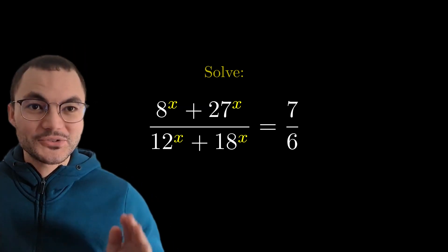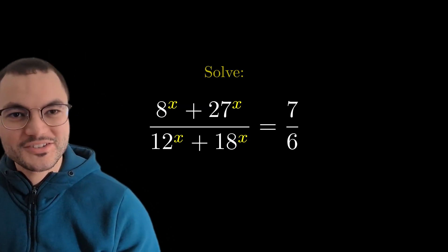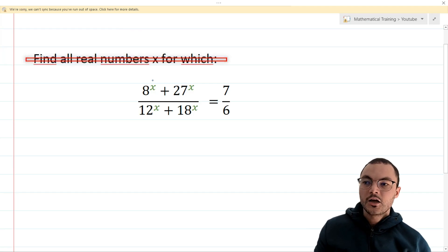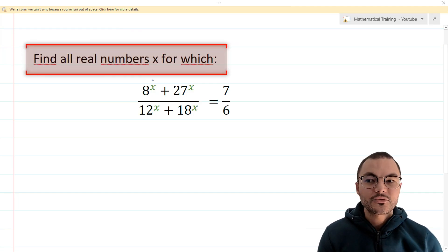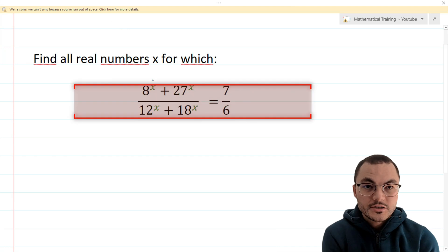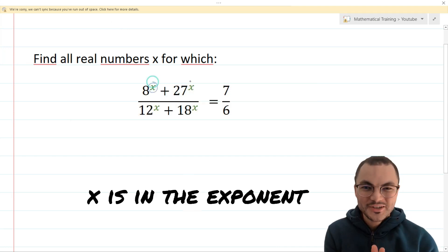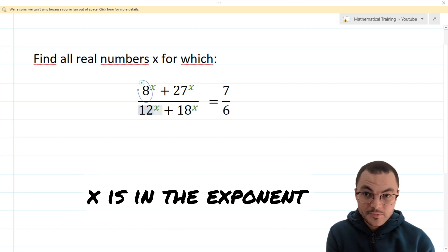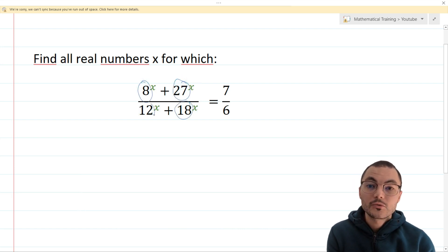Hello guys, this is Aladdin and today we'll be solving a very interesting equation. Find all real numbers x for which the following equation holds true. The tricky part about this equation lies in the fact that the unknown x is in the exponent. To tackle this problem we will need to employ an unconventional method.